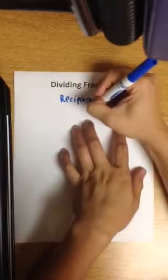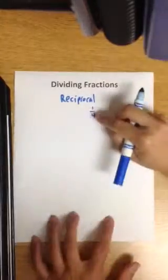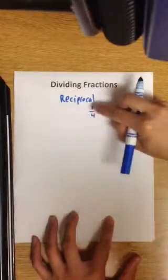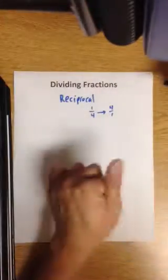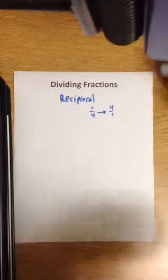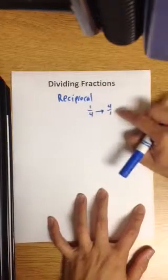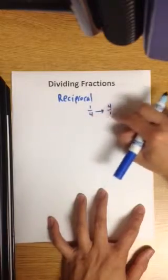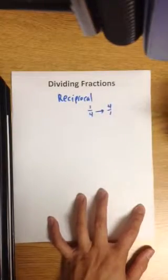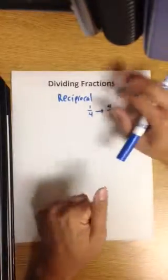For example, if you have 1/4, if you reverse the denominator and the numerator, it becomes 4/1. It's a flipping because when you multiply these two fractions, it will equal 1 whole. 1 times 4 is 4, 4 times 1 is 4, 4 fourths is 1 whole. So it's really just flipping it and it equals 1 whole.